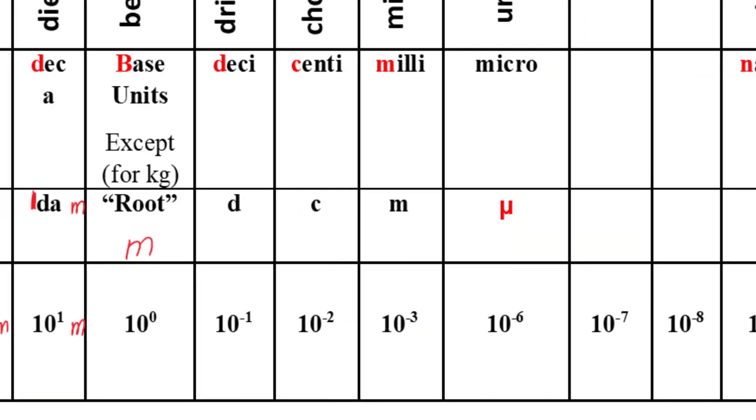Now let's move on to deci: one decimeter equals ten to the negative one meter. Centi: one centimeter equals ten to the negative two meter.